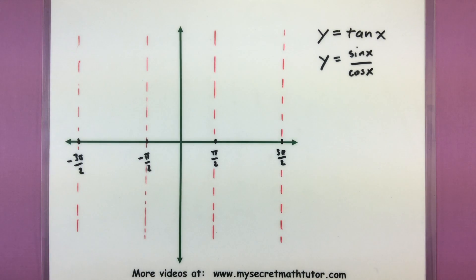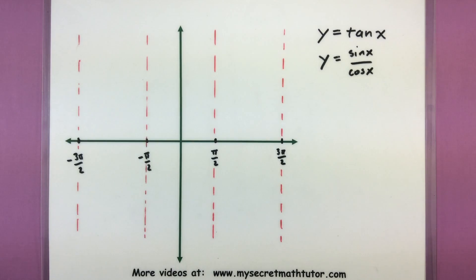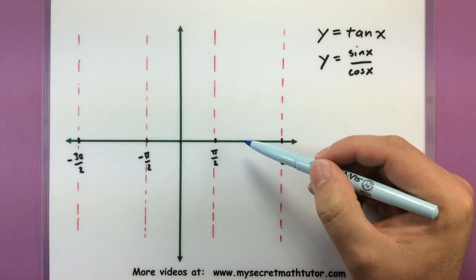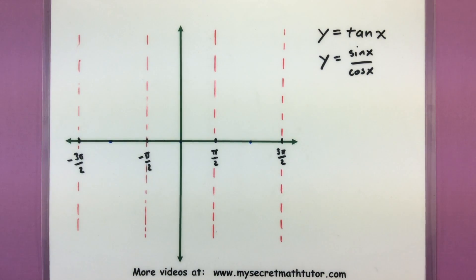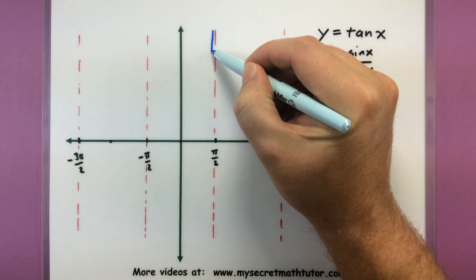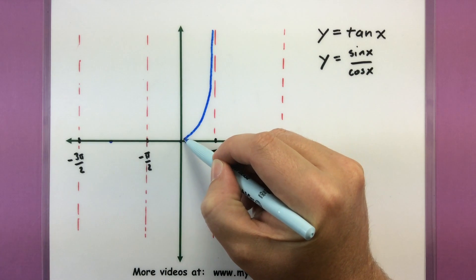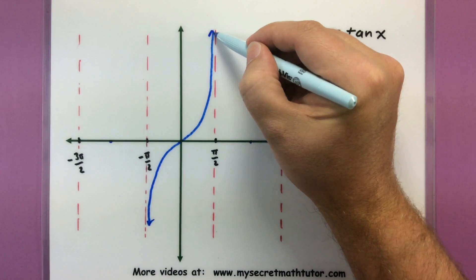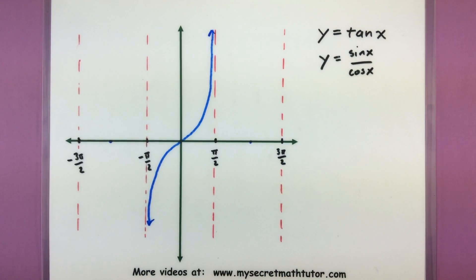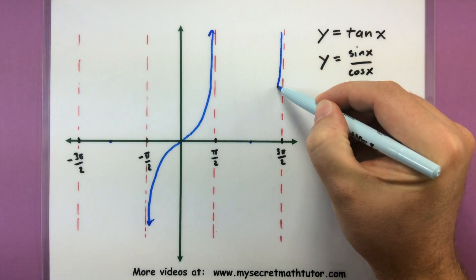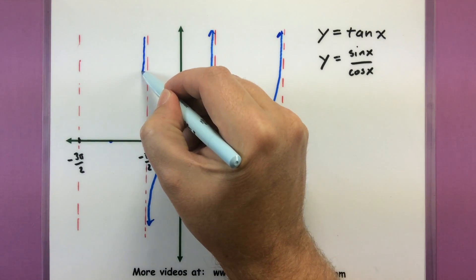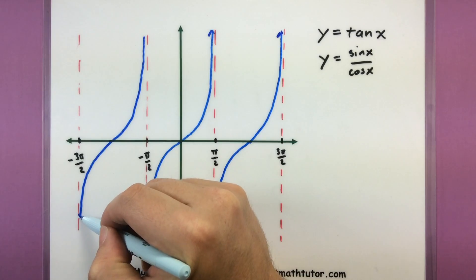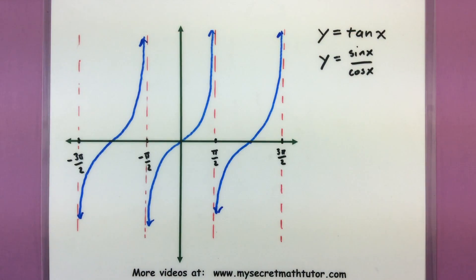Now what do we do? The graph of tangent essentially wants to hug really close to these asymptotes, and then it actually equals zero at the halfway points between them. So halfway between two asymptotes it'll equal zero, and this has kind of the shape of a cubic function. Imagine hugging really close to one asymptote, then coming through that zero point, and then hugging close to the other asymptote — never quite touching it. That would be one period of tangent, and we simply repeat this for the rest of the graph.